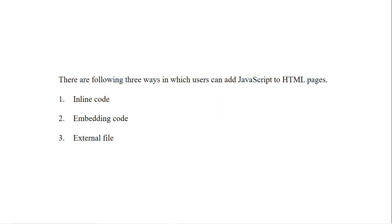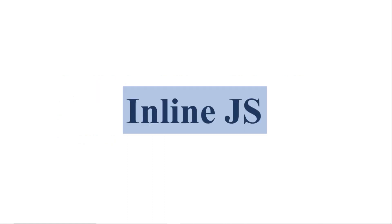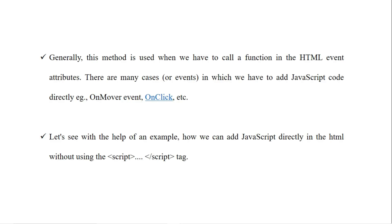In this lecture we are going to learn about inline JavaScript. Generally, this method is used when we have to call a function in an HTML event attribute. There are many cases or events in which we have to add JavaScript code directly. For example, there are events like mouseover, mouseout, onclick, onfocus, onblur, etc. Like inline CSS where we don't need the style tag, in inline JavaScript we also don't need the script tag.